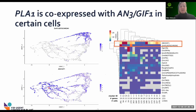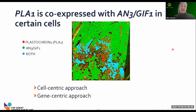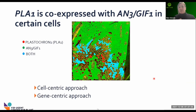AN3 has a much wider expression profile than Plastochrome 1, but there are certain clusters where we can really show that there are cells with co-expression of AN3 and Plastochrome 1. We can always bring this back to the tissue context: cells that only have Plastochrome 1 expression are shown in red, AN3 in green, and cells co-expressing both genes are shown in blue. This now allows us to do different types of analysis — a cell-centric approach where you ask which genes are co-expressed in a certain cell type, or a gene-centered approach where you identify other genes co-expressed with a gene of interest.